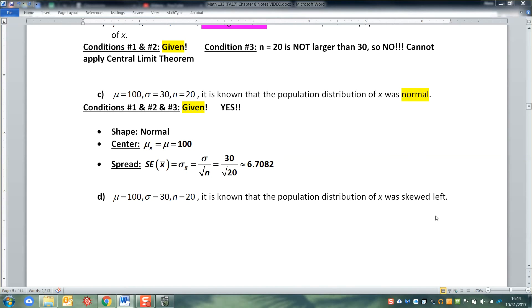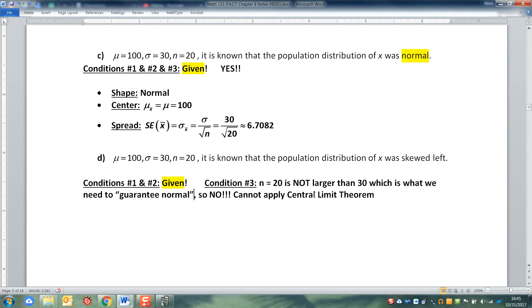All right, last one. We're in trouble because we know it's skewed left right here. It's skewed left and n = 20. Well, n = 20 is not enough to guarantee that we've overcome that skewing. So we actually don't know that it's normal and condition number three is not met.